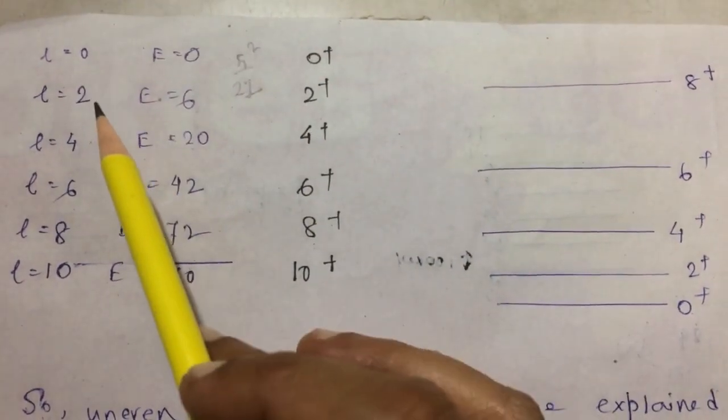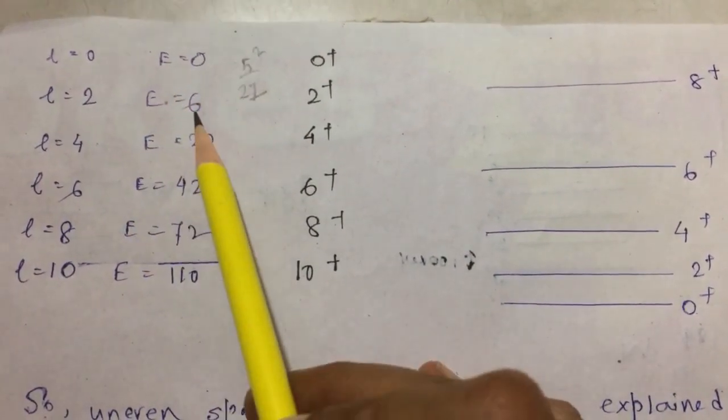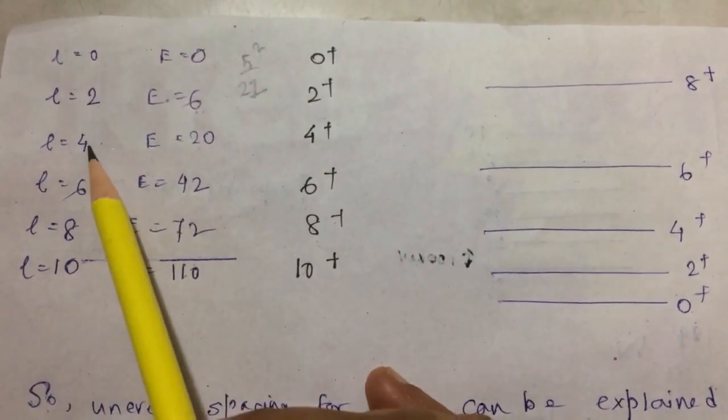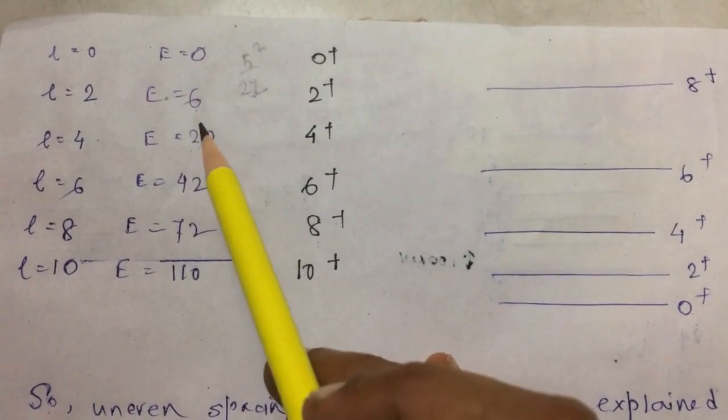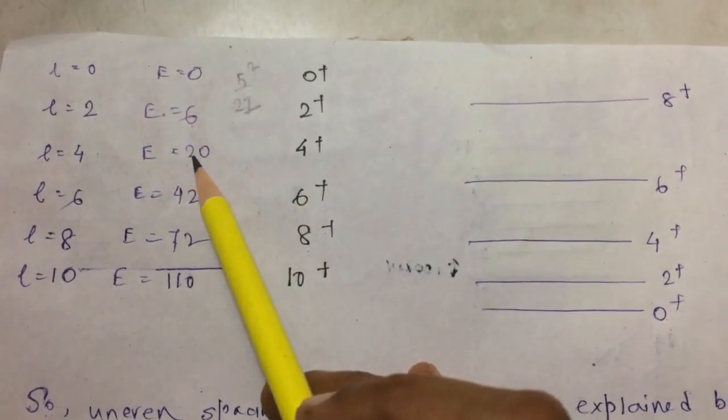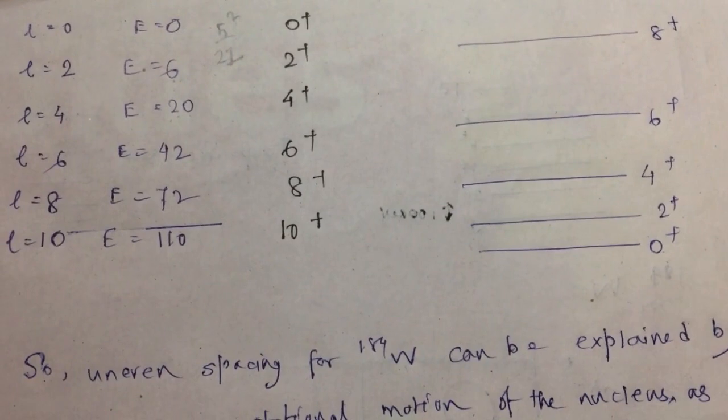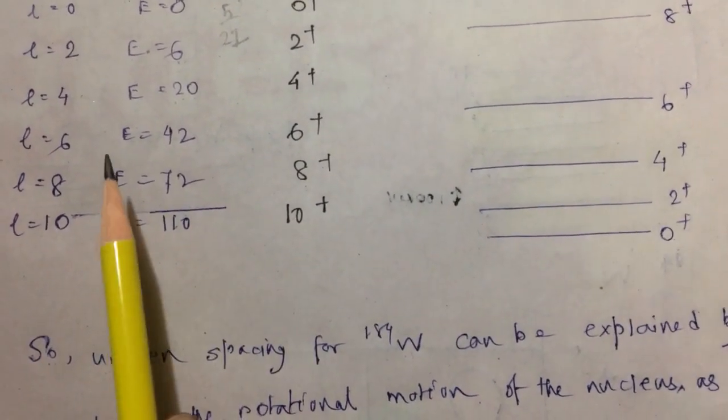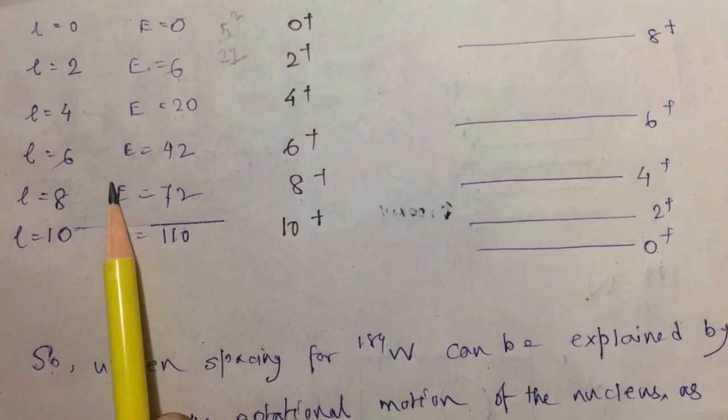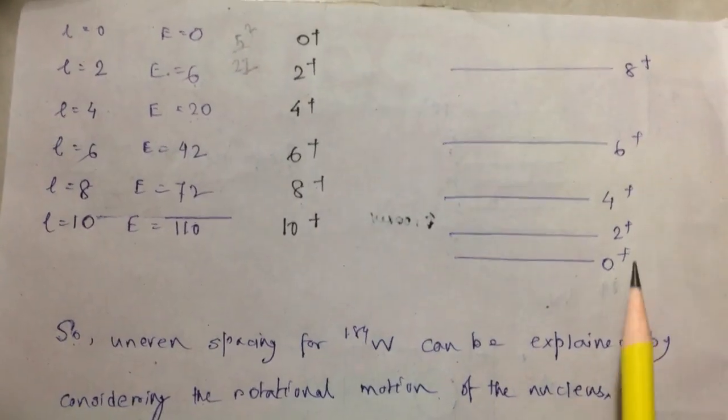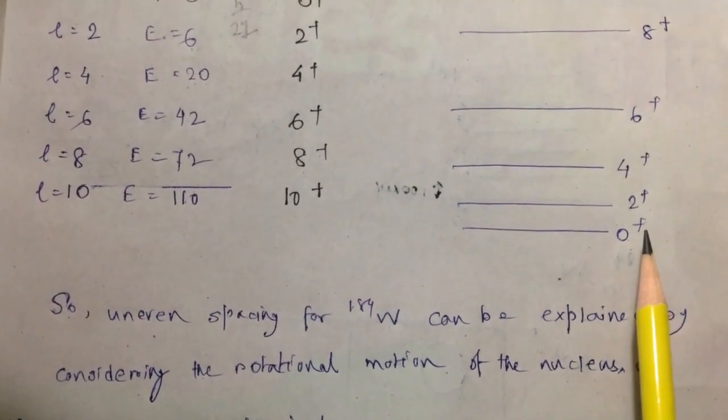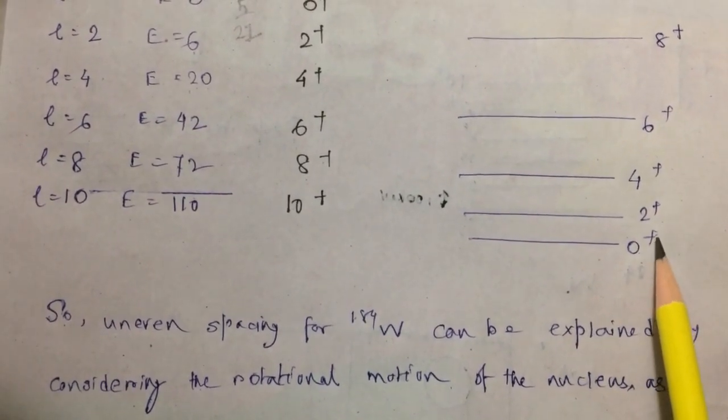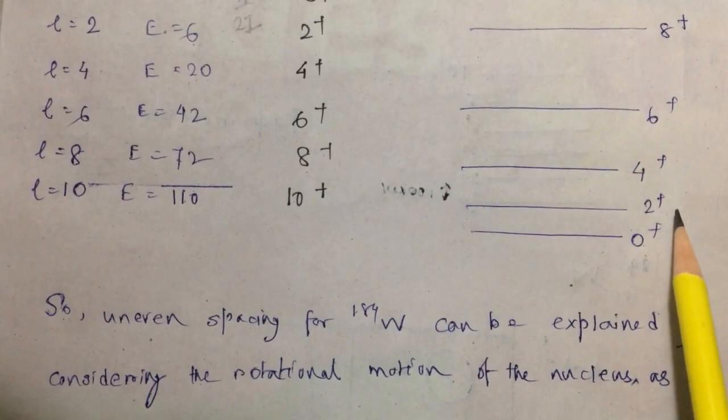But between L equal to 2 and L equal to 4, the energy values differ by 14. Now you will ask me why I have taken only the L equal to even values. This is because experimental results show that all the energy levels of tungsten show positive parity.